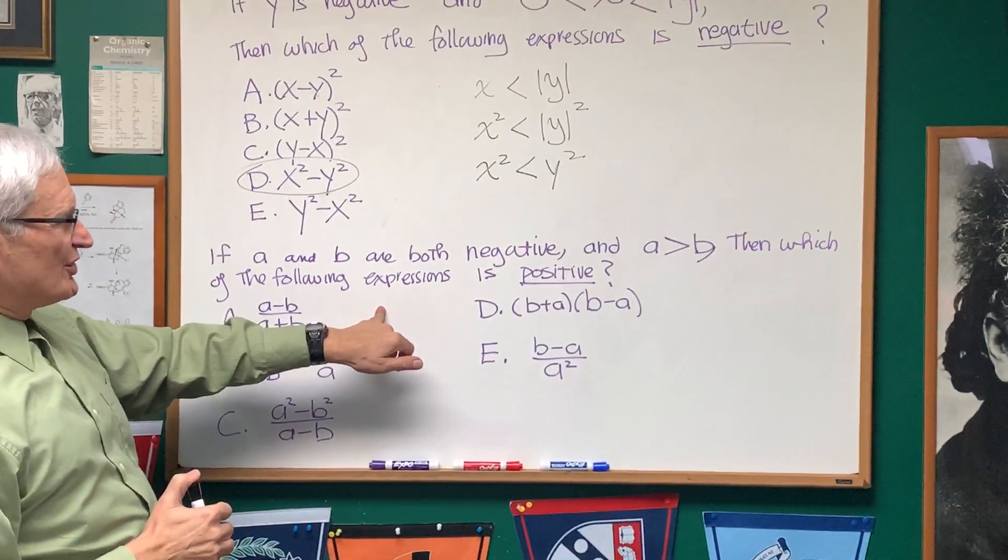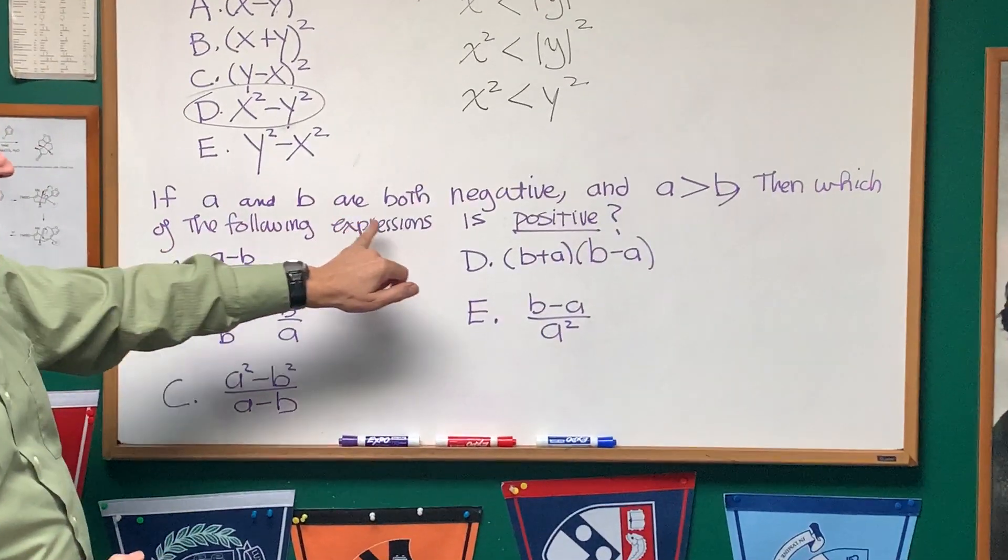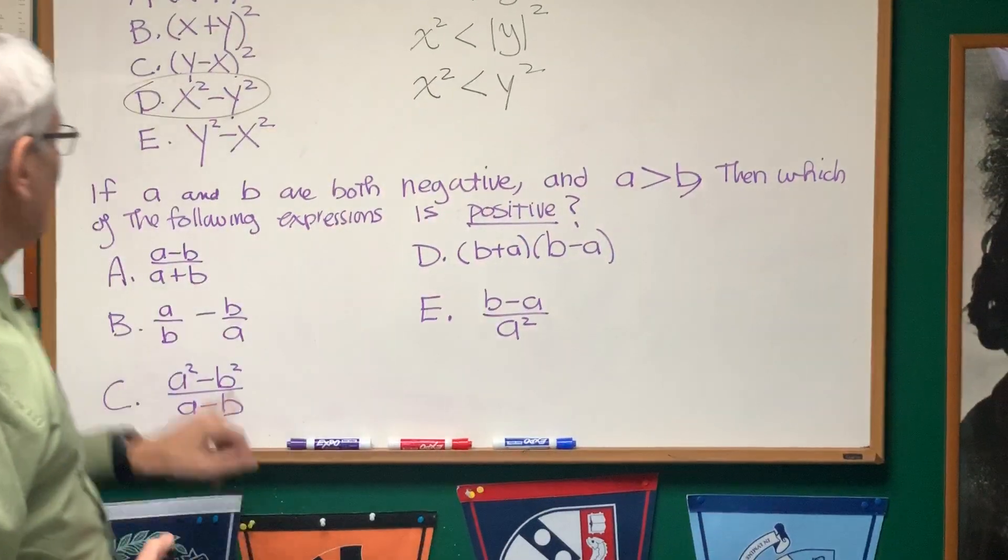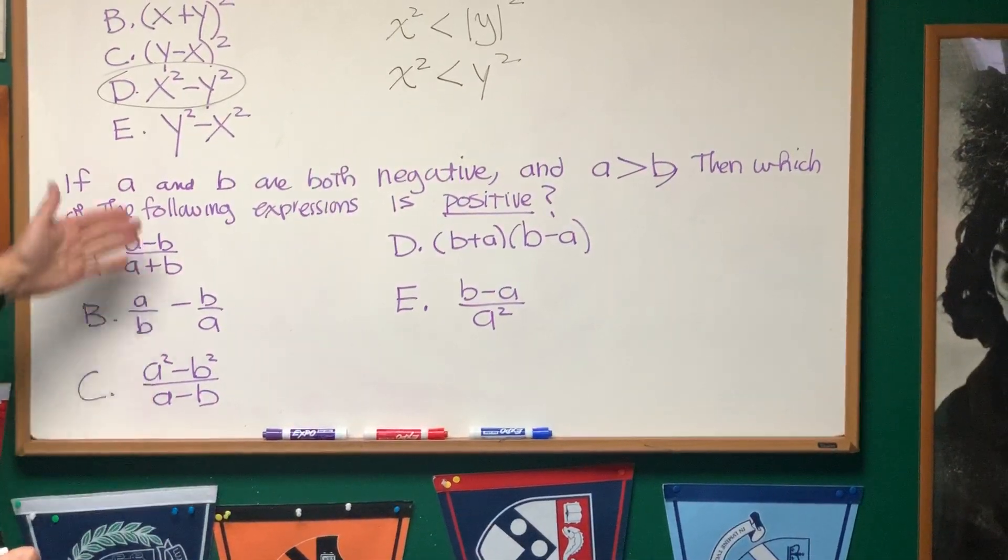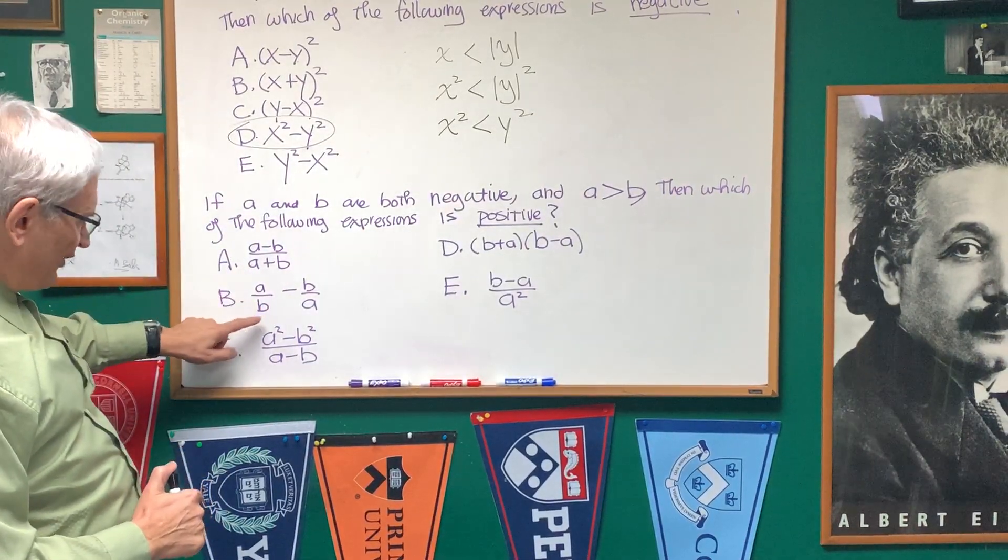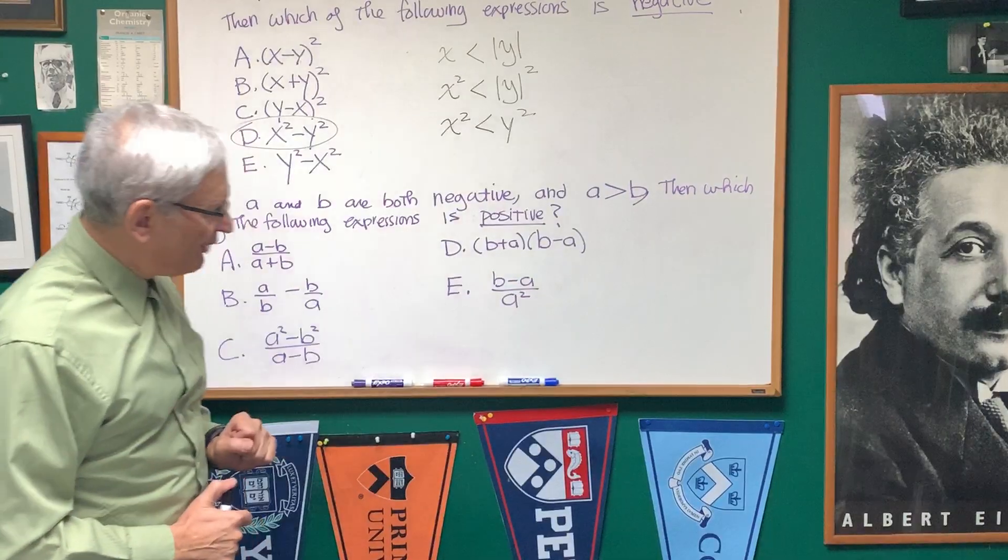All right, let's move on to this next problem of a similar type. If A and B are both negative, and A is larger than B, then which of the following expressions is positive? And we have this variety of expressions: (A-B)/(A+B), A/B - B/A, (A²-B²)/(A-B), and so forth.